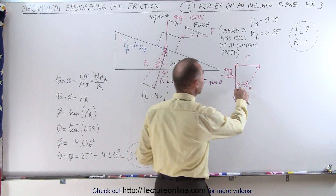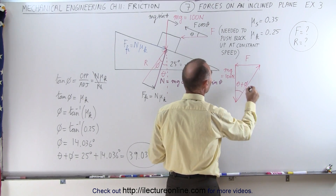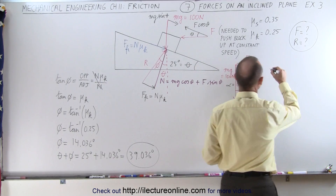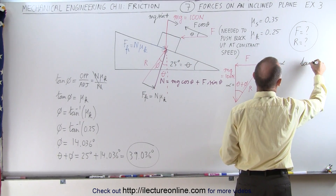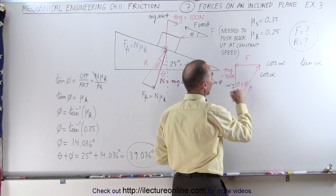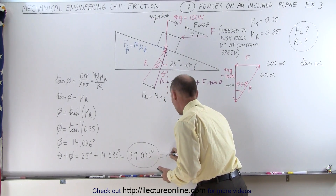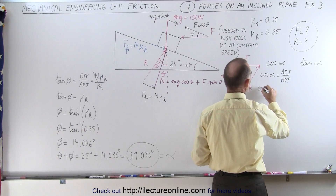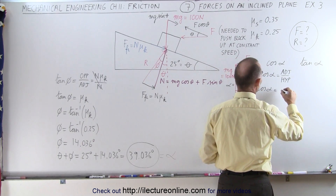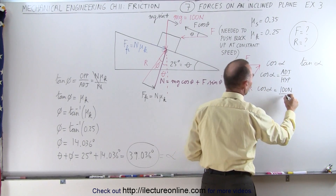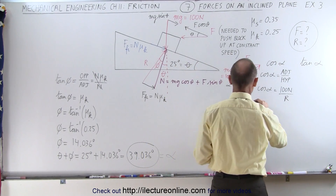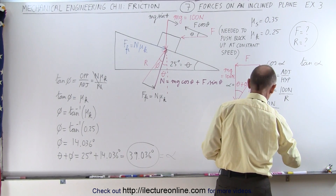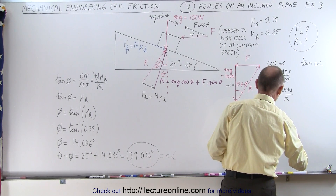Once we have that combined angle, it becomes easy to solve. We'll call alpha the sum of these two angles — alpha equals 39.036 degrees. Using the cosine of alpha, the cosine of alpha equals the adjacent side divided by the hypotenuse, so cosine of alpha equals 100 newtons divided by R, the reaction force. That means R equals 100 newtons divided by the cosine of 39.036 degrees.